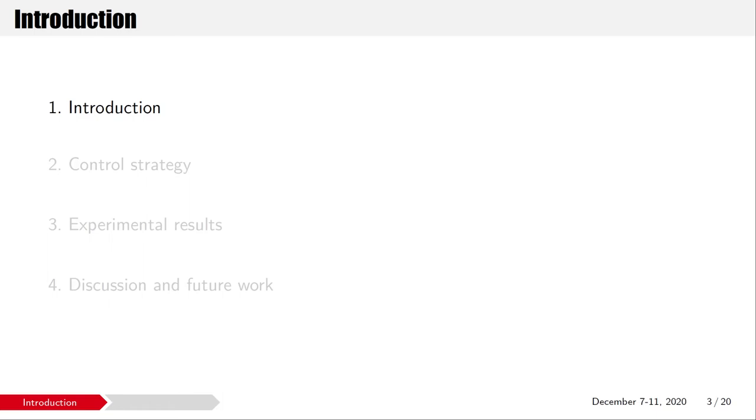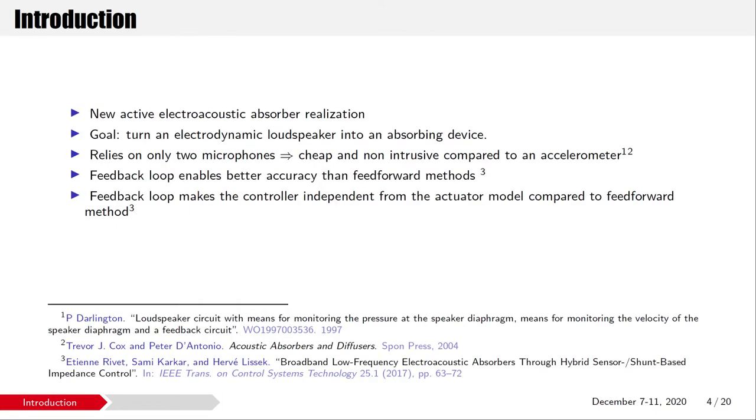The introduction. As I have just said, I am presenting a new active electroacoustic absorber realization. The goal is to turn an electrodynamic loudspeaker into an absorbing device. My design relies on only two sensors, two microphones. They are therefore quite cheap and unintrusive. Some other designs use an accelerometer that is glued on the loudspeaker membrane, which is not okay for small transducers. The use of two sensors allows to implement a feedback loop, which will lead to better accuracy and enables us to be free from an actuator model. In this case, the actuator would be the loudspeaker.